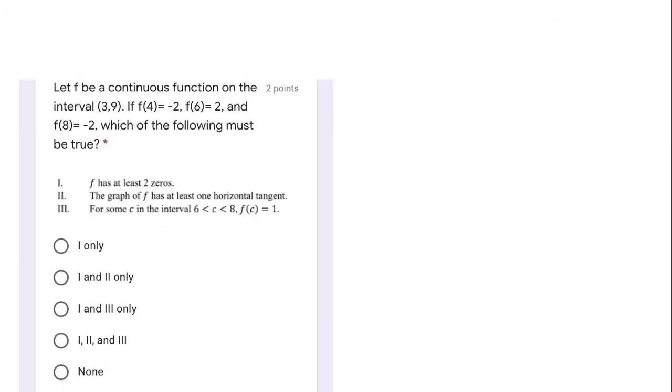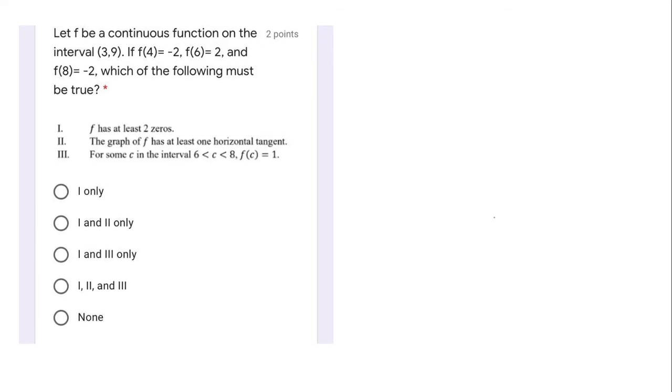Let's go on to the next problem. So f is a continuous function on the open interval 3 comma 9. We're given f of 4 is negative 2, f of 6 is 2, and f of 8 is negative 2.